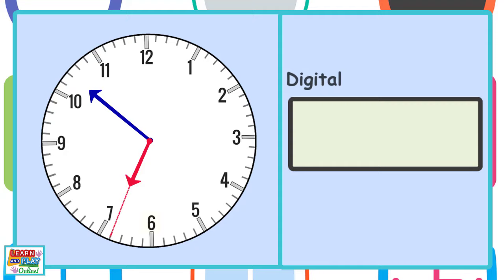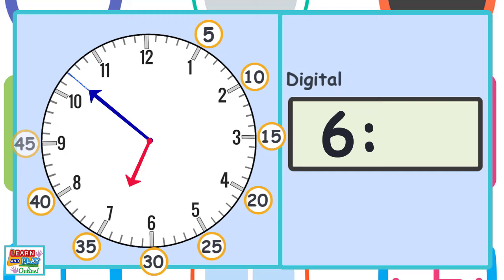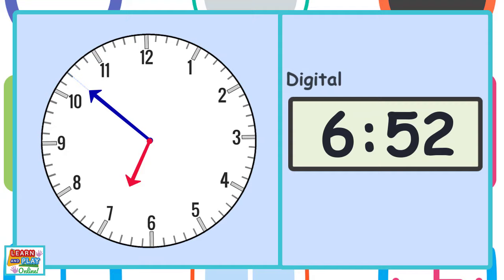In this example, we can see that the hour hand is still in the 6th hour, so it is 6 something, as it has not yet reached the number 7. You can see that the minute hand is pointing to a little line that is not at a number on the clock face. This means we will first count by 5s until we get to the number 10 on the clock face, and then count by 1s: 5, 10, 15, 20, 25, 30, 35, 40 — then continuing — so that means the time is 6:52.